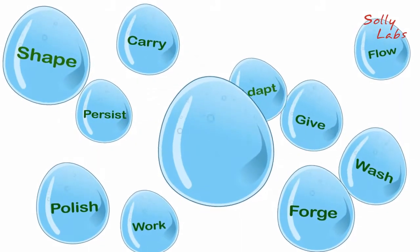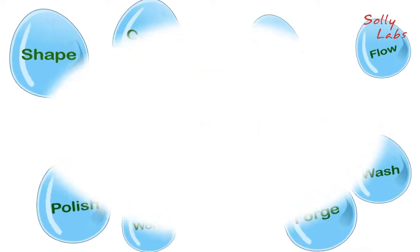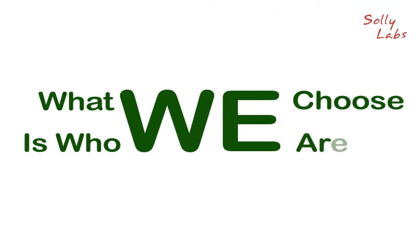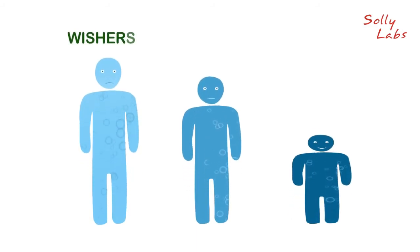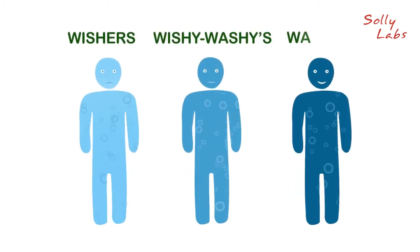It's all about possibility. What we choose is who we are. Here's one way to look at it. There are three kinds of people: wishers, wishy-washers, washers.